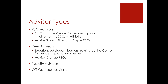There are a number of different advisor types that you may hear or see referenced. First, we have our RSO advisors. These are professional staff from the Center for Leadership and Involvement, the University of Chicago Community Service Center, or Athletics. They advise green, blue, and purple RSOs. Next, we have peer advisors. These are experienced student leaders that are trained by the Center for Leadership and Involvement to help assist and advise your RSO. They advise all orange RSOs.